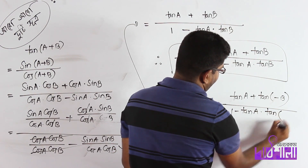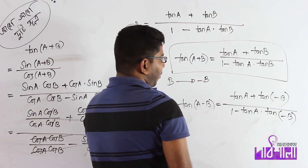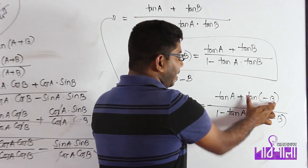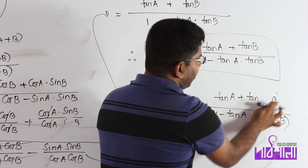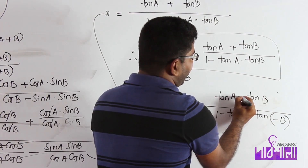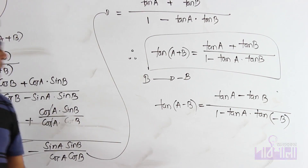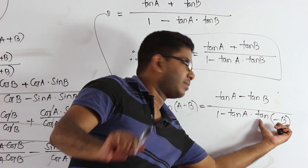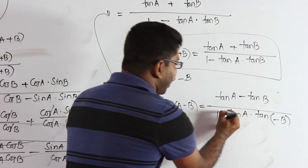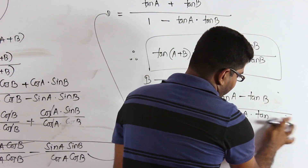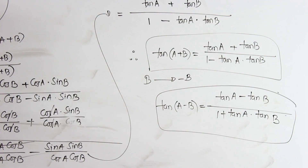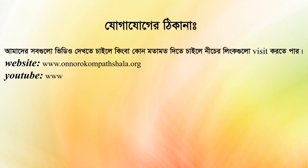And then tan(a plus b) with the plus or minus sign, and ultimately tan(a minus b) equals (tan a minus tan b) divided by (1 plus tan a tan b).